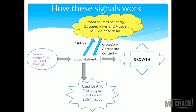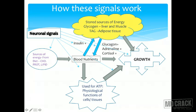Blood nutrients also help in growth — either longitudinal or horizontal depending on age. ATP is used for these growth purposes, and stored forms are also used for growth. Neuronal signals influence how much you eat and how much is absorbed, the use of blood nutrients for ATP, and the release of insulin. The brain can have an effect on all these levels — whether it is hormone release, storage of a nutrient, or release of a nutrient — these signals are all coordinated.